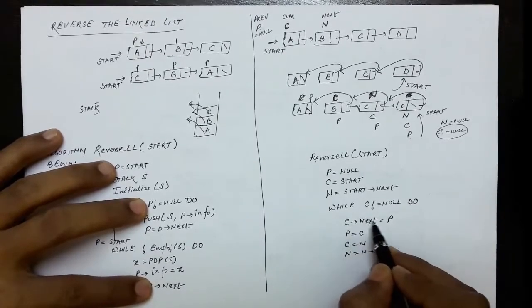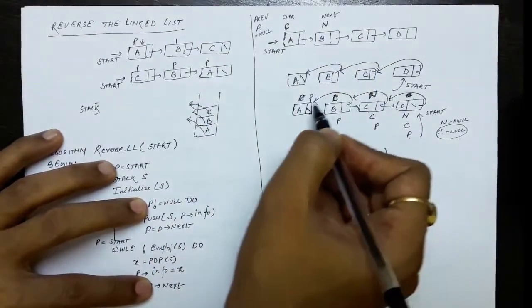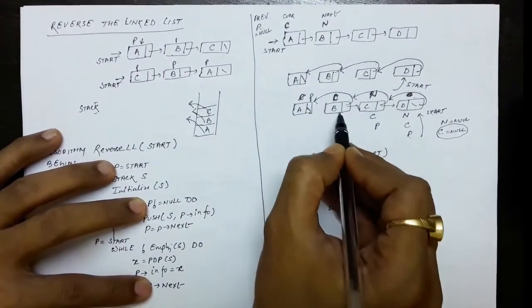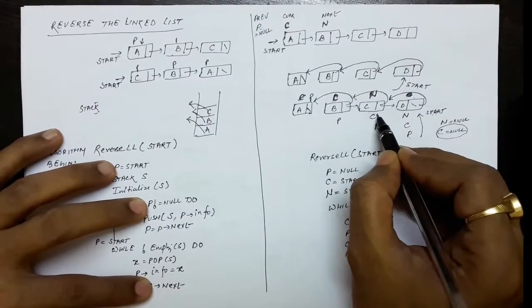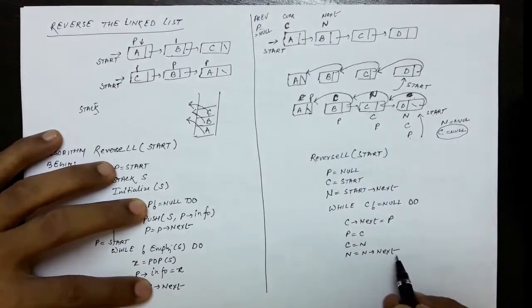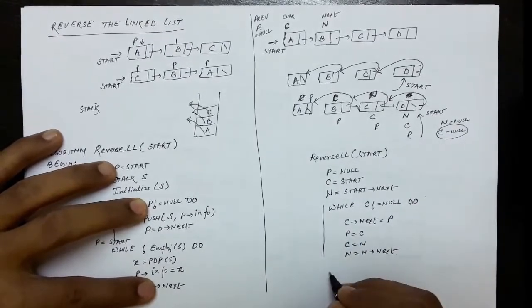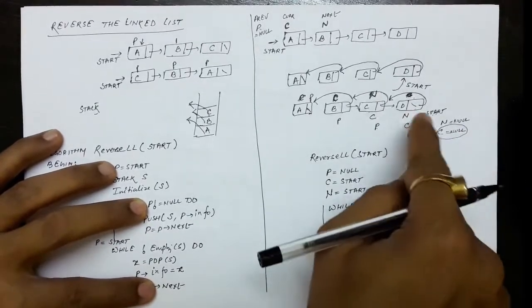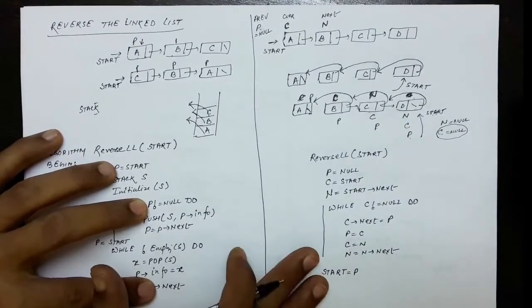N equals N dot next means N is directed to point to the next node. So the loop finishes when C becomes null. We are done with the reversal process. The only thing remaining is to set start equals P. When C becomes null, P is at the last node, so start needs to come to that last node. So start equals P, and this is how the reversal is done.